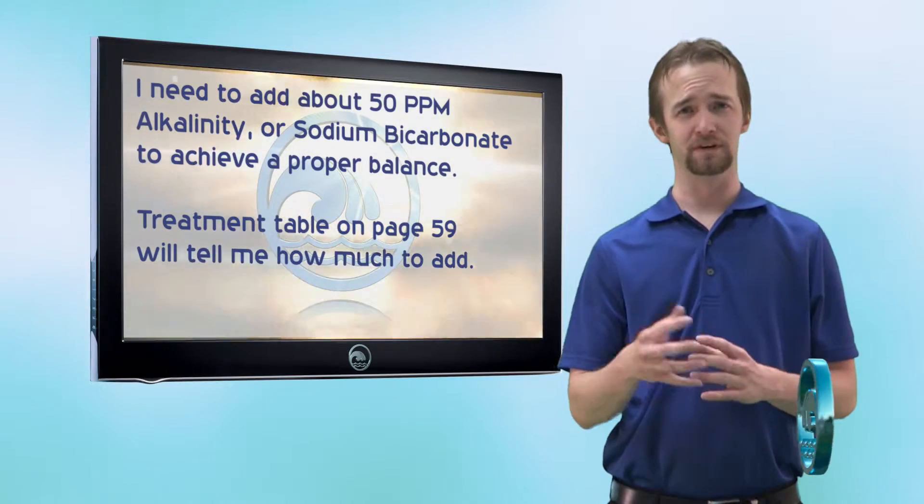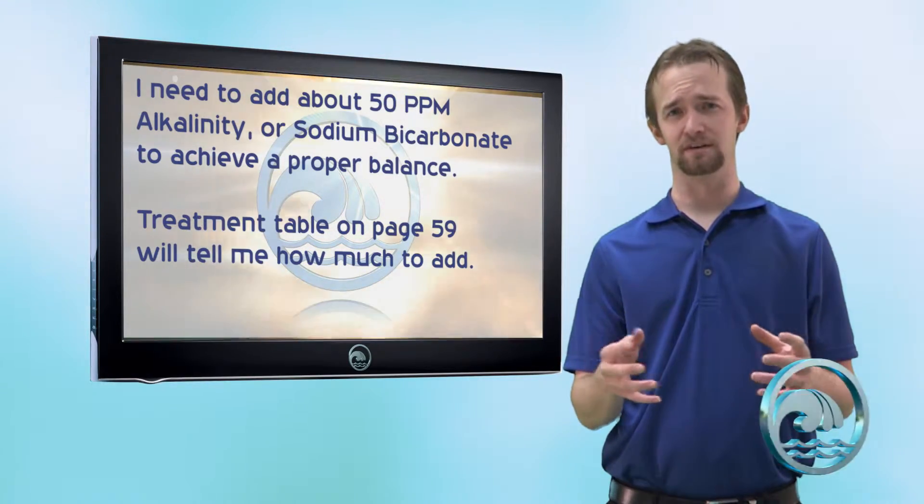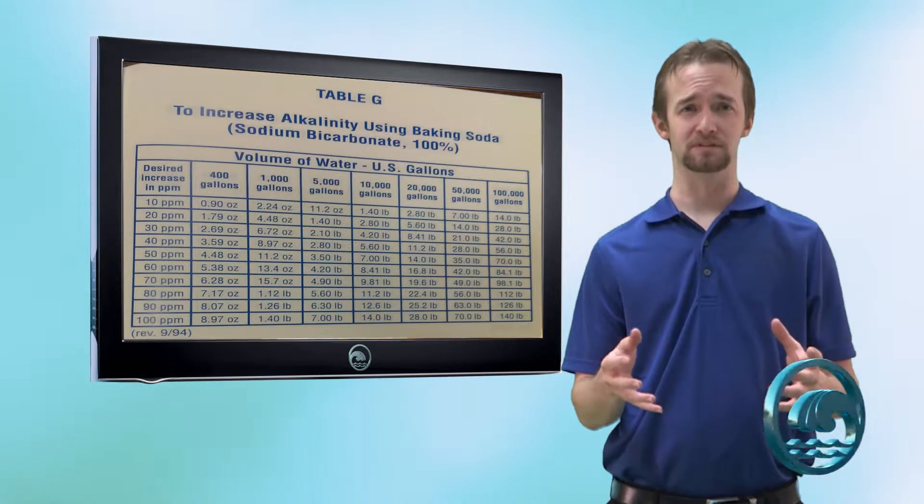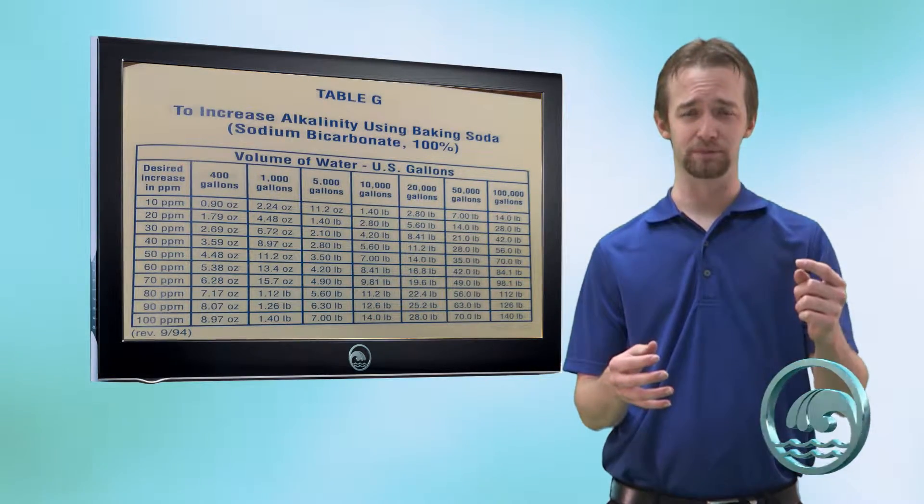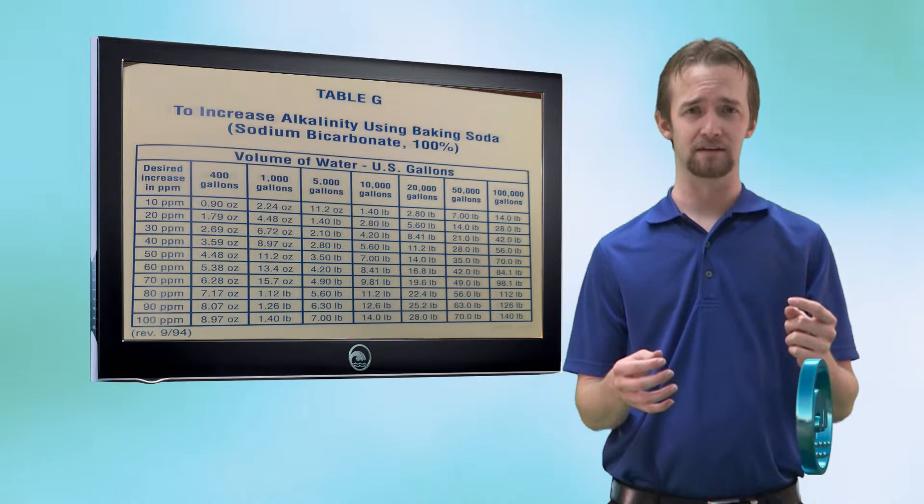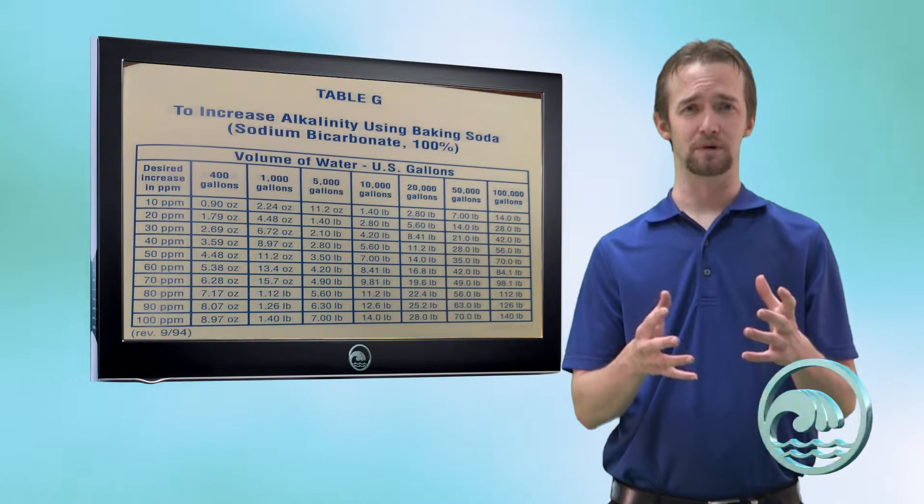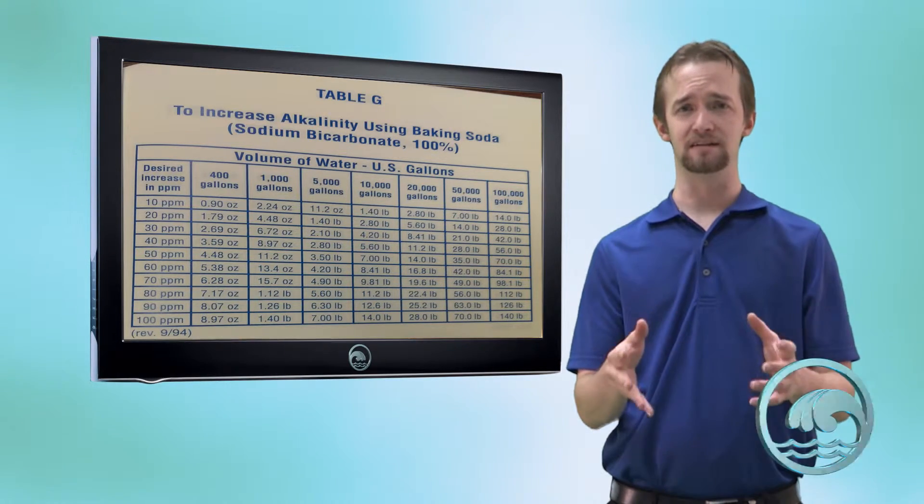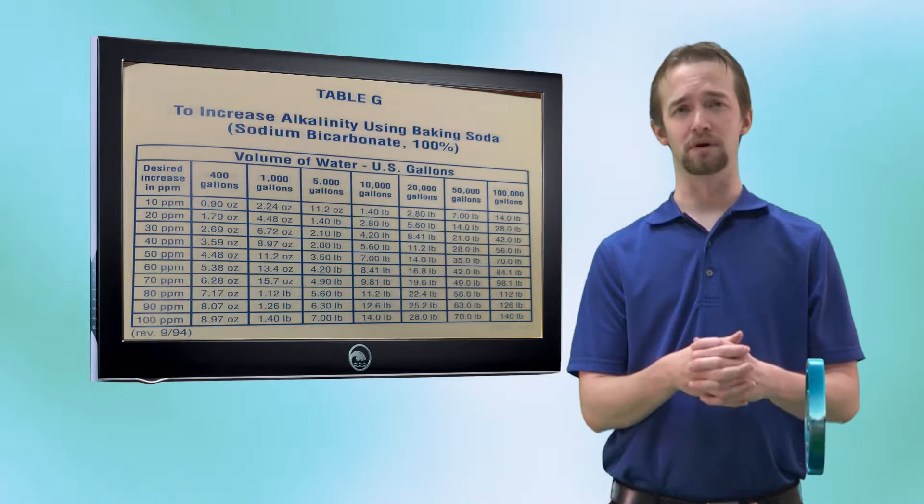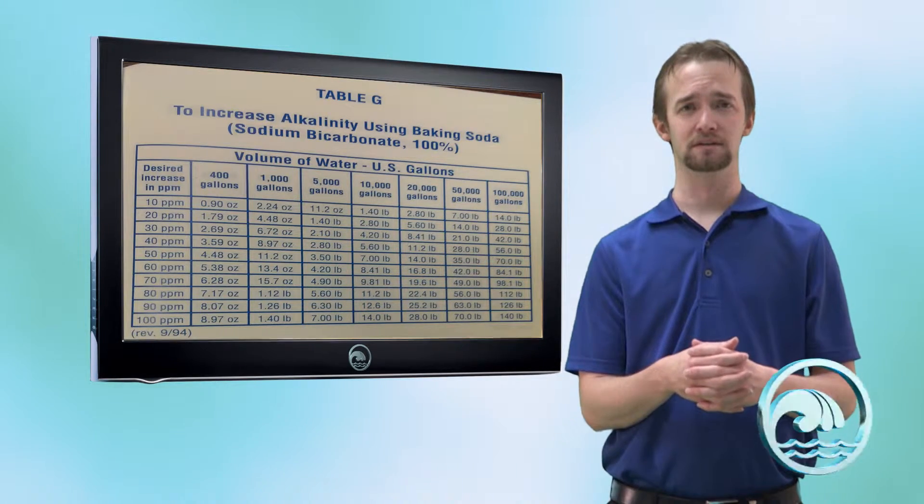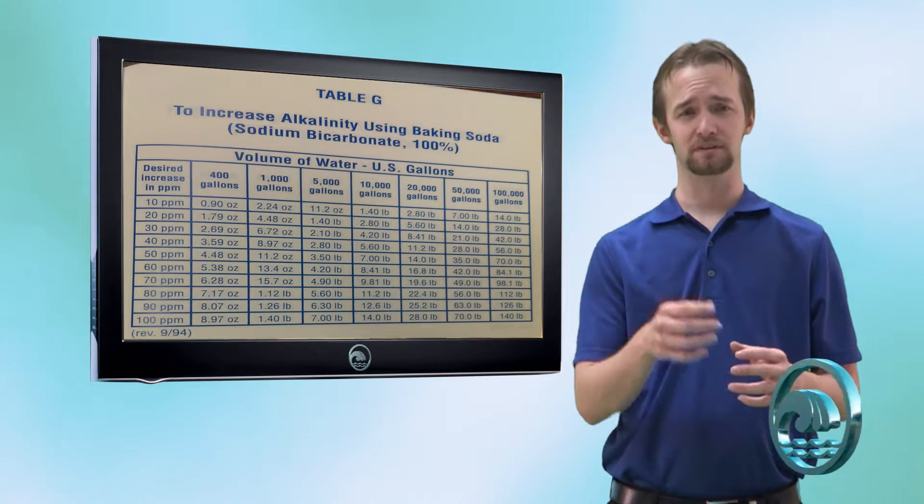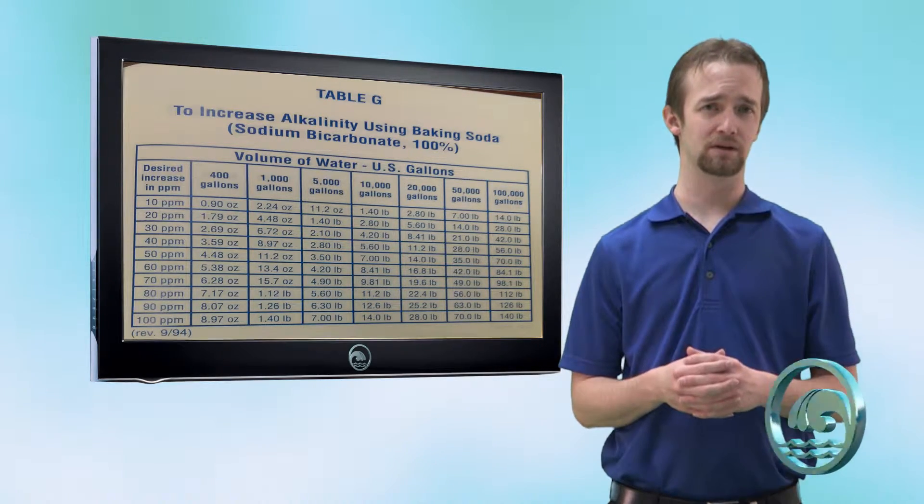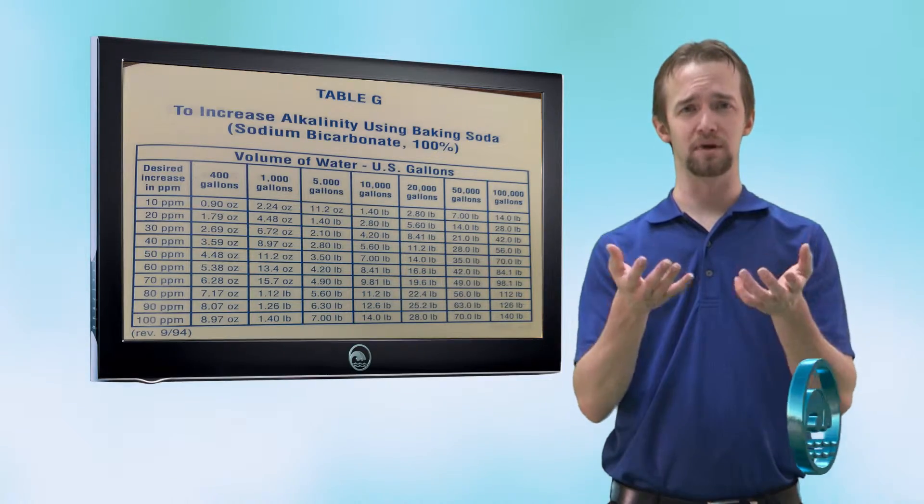The treatment table for figuring out how to increase your alkalinity using sodium bicarbonate is on page 59. The way this treatment table works is you take in parts per million the amount of alkalinity you need to add and then find the gallons of your pool. So my pool is 10,000 gallons, my alkalinity reading was 60, I need to get to 110, which means I need to add 50 parts per million alkalinity. So 50 parts per million, 10,000 gallons of water, tells me I need to add 7 pounds of sodium bicarbonate in order to bring my alkalinity back into range.